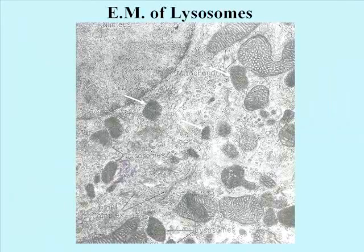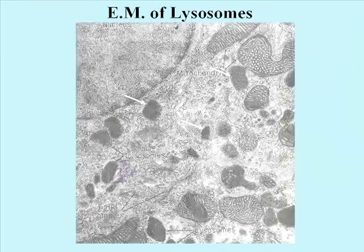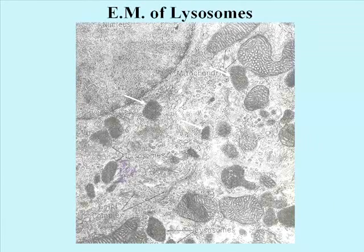This is a TEM of lysosomes in situ, again in place. The darker structures pointed to by the white arrows are the lysosomes. They're dark in electron microscopy because they pick up a lot of the electron dense stain used to prepare the specimen, and they pick up a lot of the stain because the concentration of packaged proteins in lysosomes and similarly derived organelles is quite high.